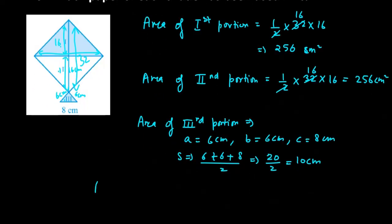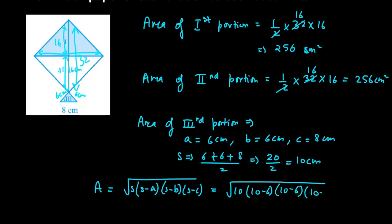Now find the area using Heron's formula: root of s times s minus a times s minus b times s minus c. Putting the values: 10 times (10 minus 6) times (10 minus 6) times (10 minus 8). So you have 10 into 4 into 4 into 2.